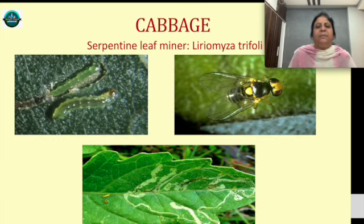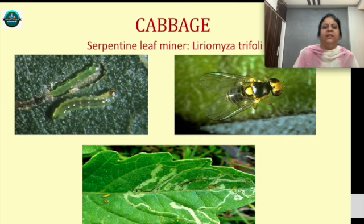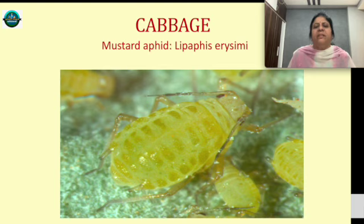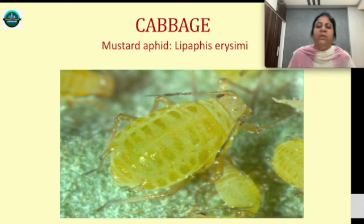This is a serpentine leaf miner — Liriomyza trifolii — causing characteristic tunneling damage on leaves. Serpentine leaf miner is found on cabbage. Mustard aphid also attacks cabbage and mustard, as they belong to the same family.